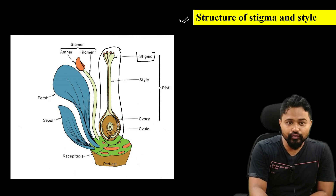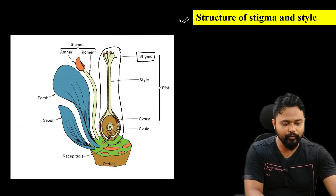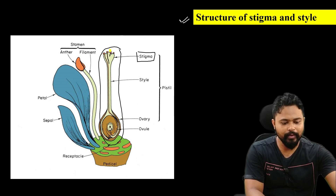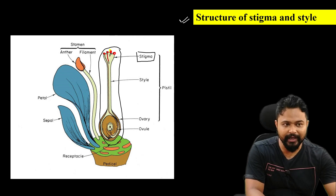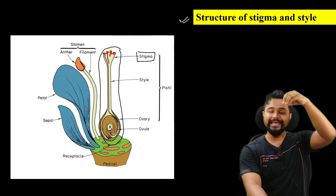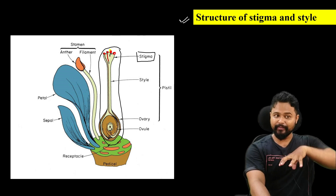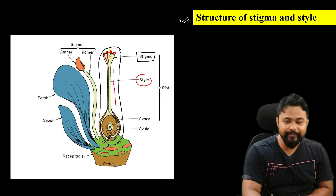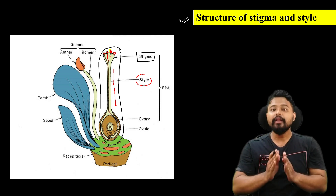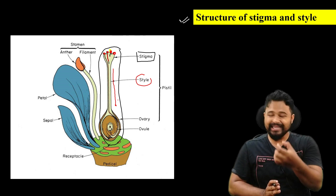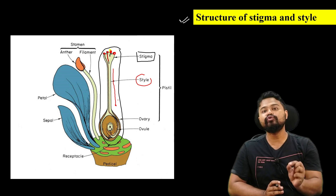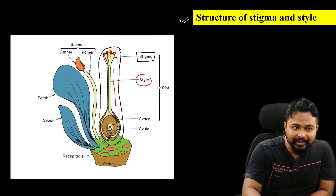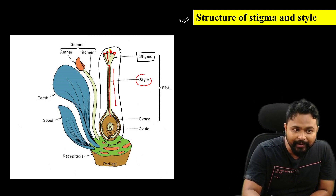Stigma is where pollen lands and germinates. Style is the dingy area — the hollow cylindrical part through which the pollen tube germinates and grows.